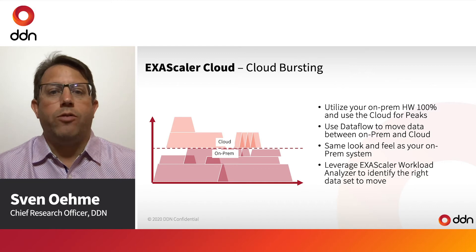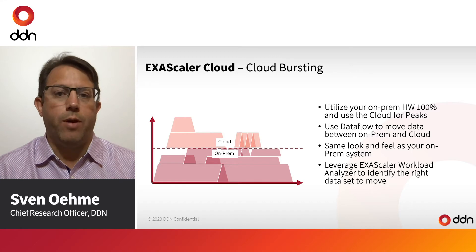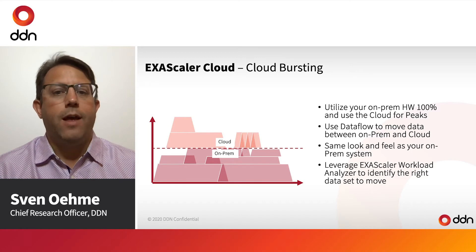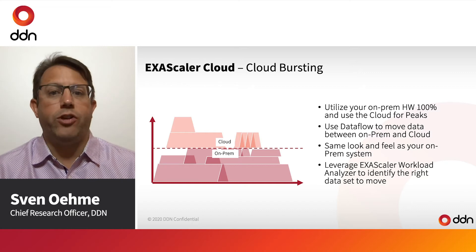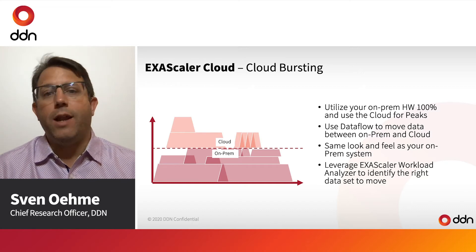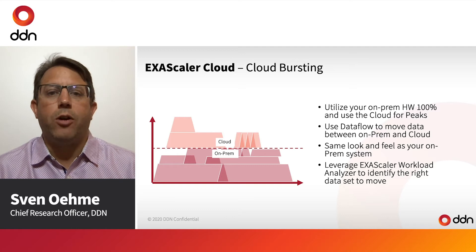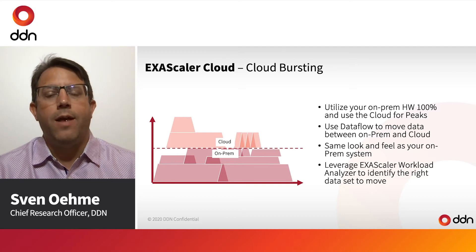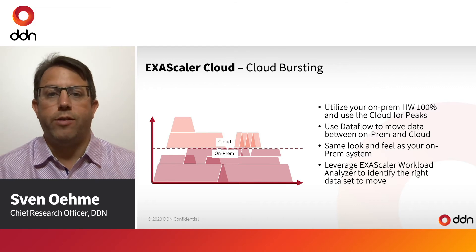Cloud bursting allows you to leverage capacity in the cloud whenever you hit peak demands on-prem. Running your on-prem infrastructure at 100% is the most efficient way of leveraging on-prem hardware. But in cases where there is peak demand or unforeseeable projects come up, cloud bursting leveraging ExaScaler Cloud is a very good solution to address this problem.